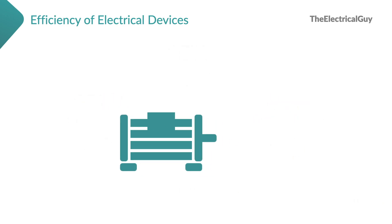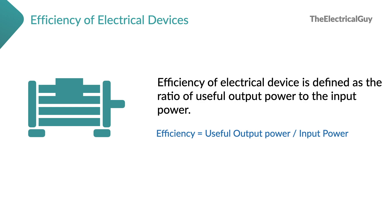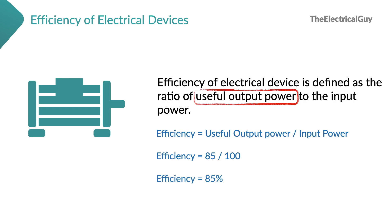Let's now define efficiency in proper language. Efficiency of an electrical device is defined as the ratio of useful output power to the input power. The word 'useful output power' is really important here, because heat energy is also an output, but we cannot consider it for the calculation of efficiency because it is a non-useful output. So in our example of the motor, the useful output power is only 85, and the efficiency of the motor becomes 85%. We refer to efficiency in percentage.